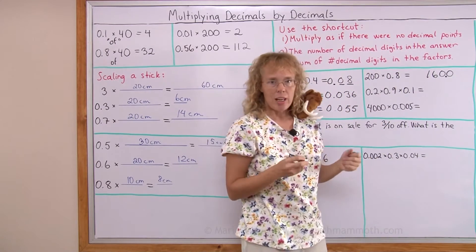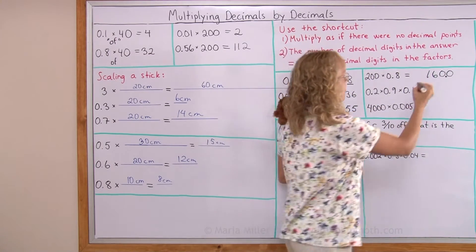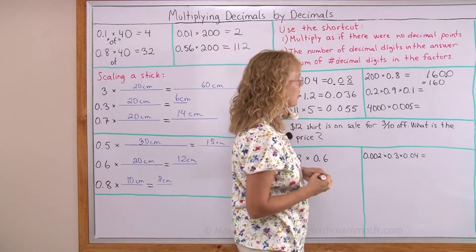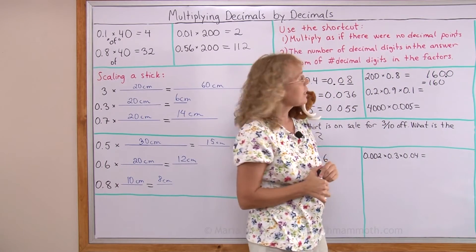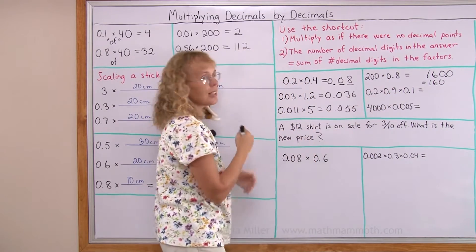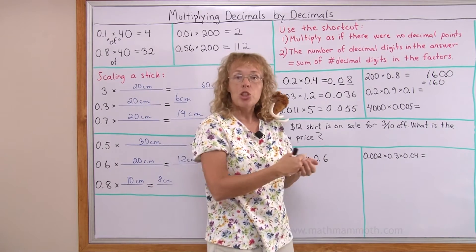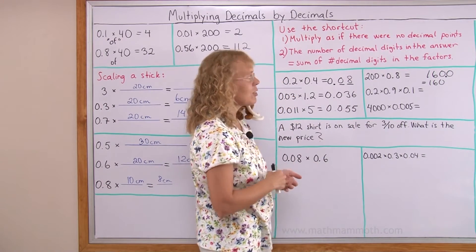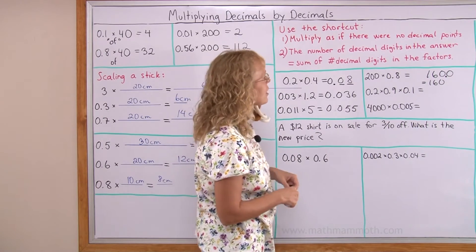Okay? I could now simplify this to plain one hundred and sixty. I don't need this ending zero. And notice that this makes sense because you could also think of it as we did before as eight tenths of two hundred. One tenth of two hundred would be twenty and so eight tenths would be eight times twenty or one hundred and sixty.